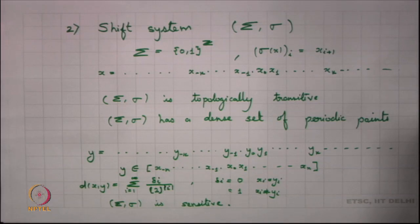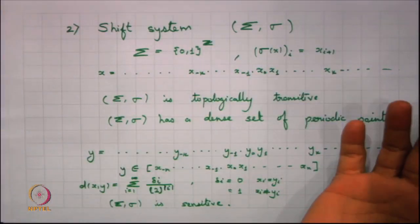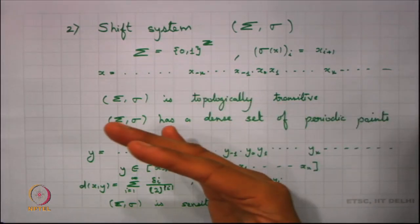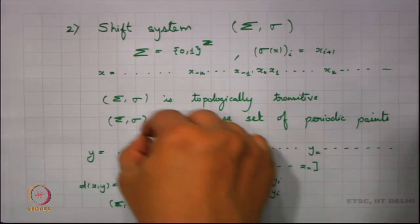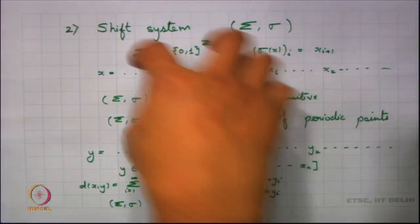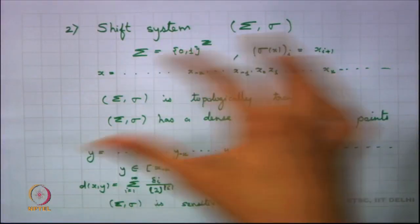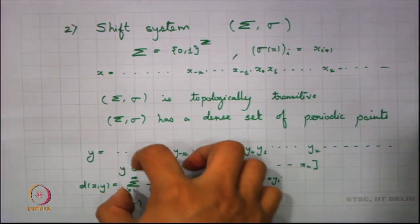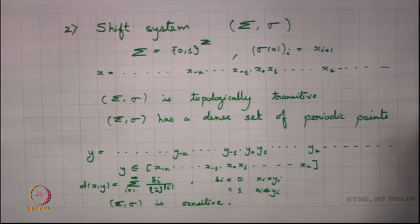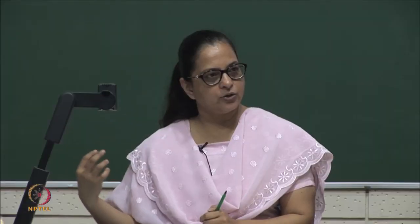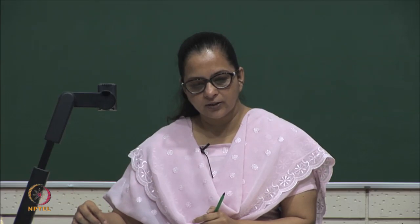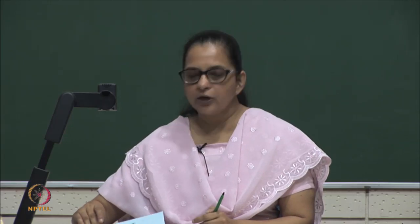So our shift system is also a good model for a chaotic system. We have also seen that the shift system is topologically conjugate to the horseshoe attractor. But in the horseshoe attractor we need to check what happens to sensitivity, because we know that topological transitivity and dense periodic points are closed under topological conjugacy. What happens to sensitivity in that particular case? It is very natural to say that since the shift system is sensitive, our horseshoe attractor should also have been sensitive.